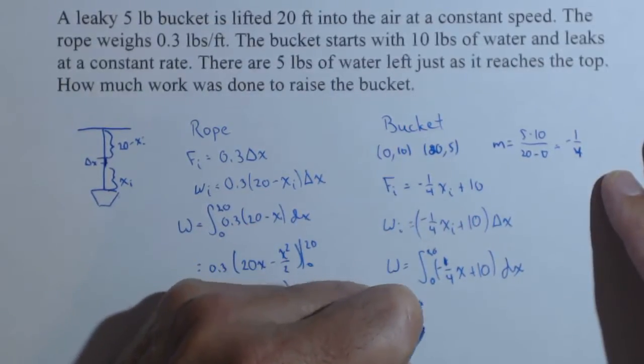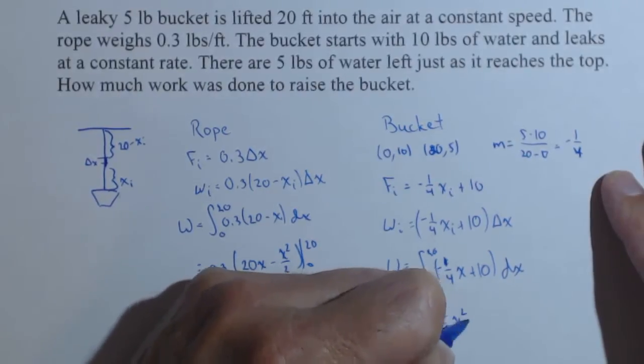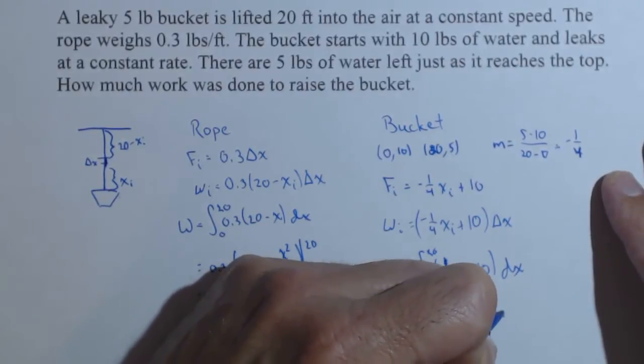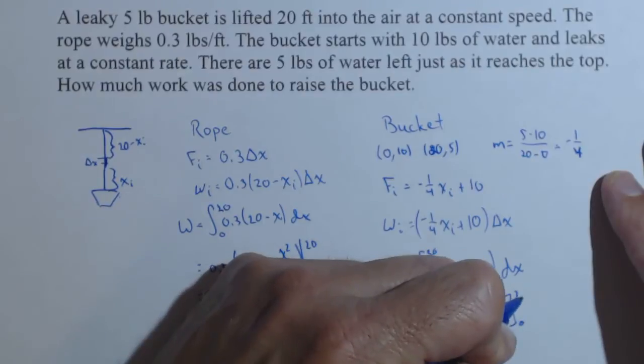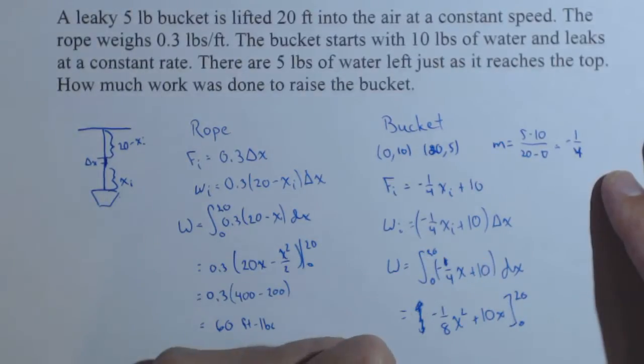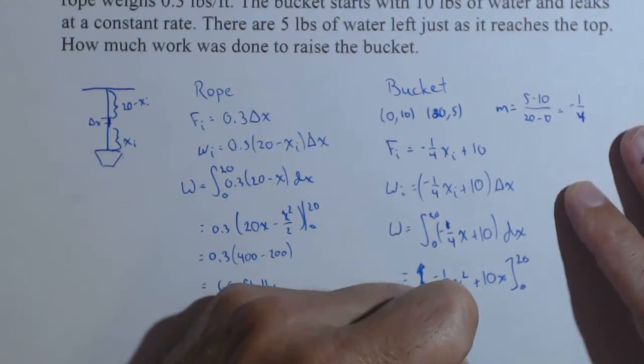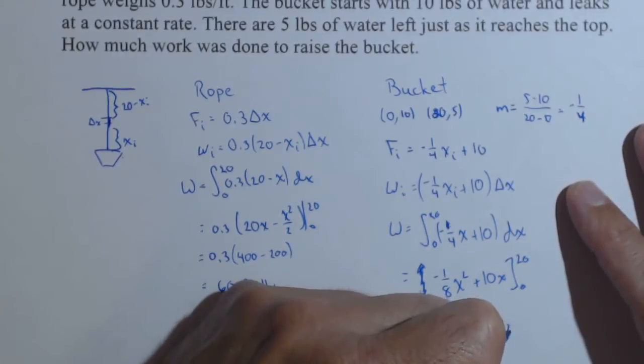So integrating, sorry, negative 1 eighth x squared plus 10x from 0 to 20. So here we're going to have negative 1 eighth times 20 squared plus 10 times 20.